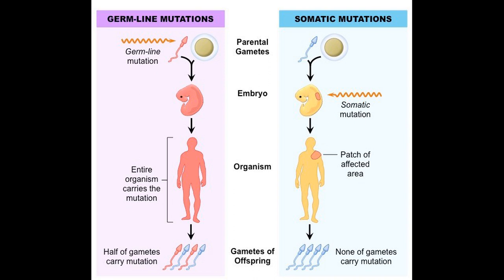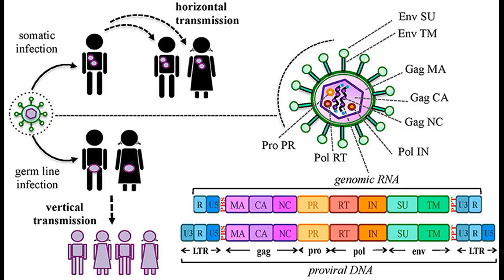This is known as the Weismann barrier, which we covered in the previous video on genetic inheritance. However, even though it is rarer, HGT still occurs in multicelled organisms, and it had a significant role in their evolution as well.